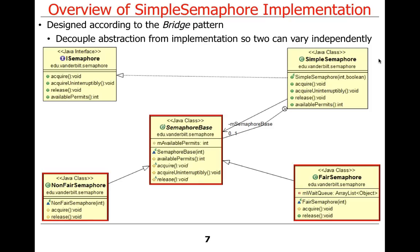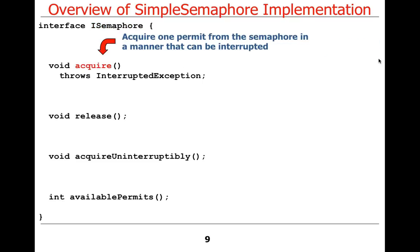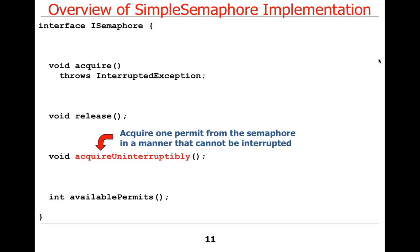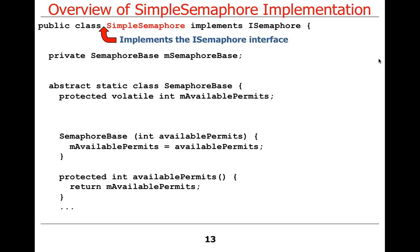This is straight out of what's done in the Java implementation. Let's take a look at a little bit of code. Here is ISemaphore — very simple. We have acquire, release, acquireUninterruptably, and availablePermits. Those are just interface methods. Nothing unusual there.